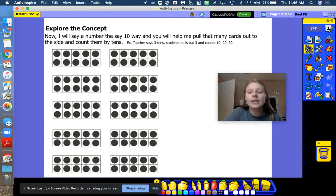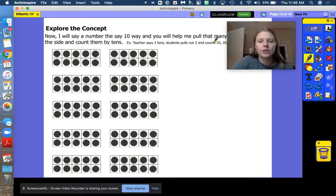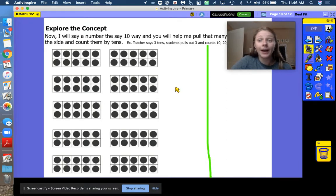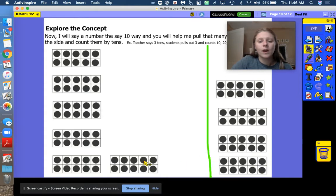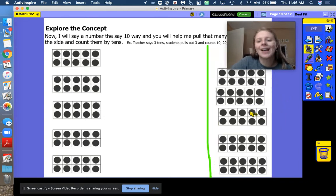All right, I am going to say a number and I want you to help me pull out how many cards I need. So for example, I'm going to say five tens. How many of these ten frames would I need to bring over here to my teacher's side? Five tens. You're right. Let's count out five ten cards. One, two, three, four, five.